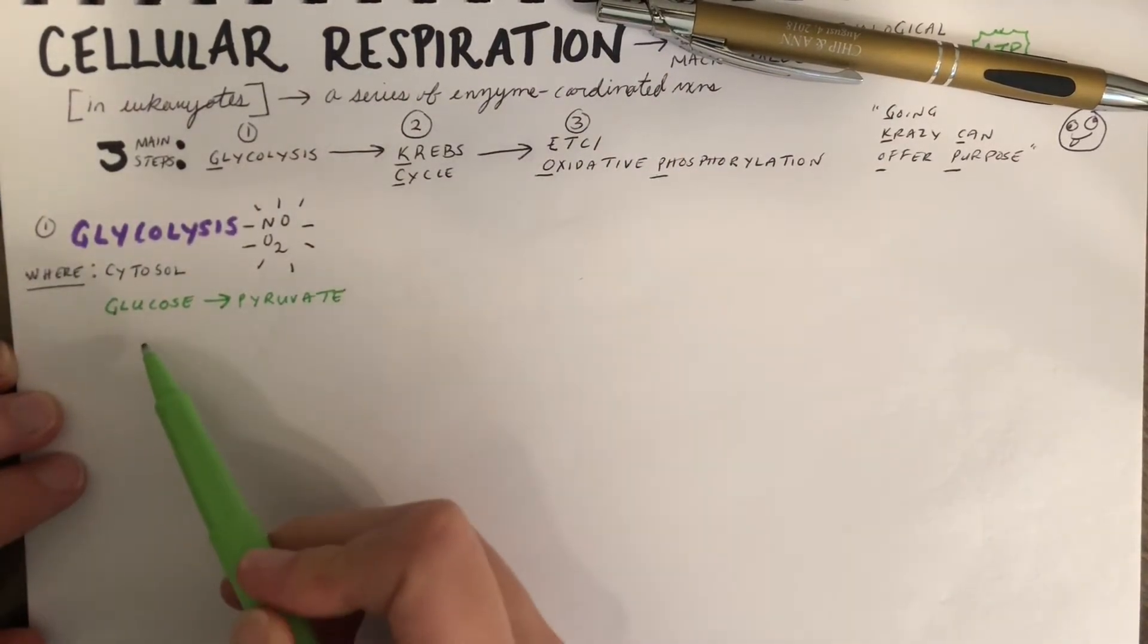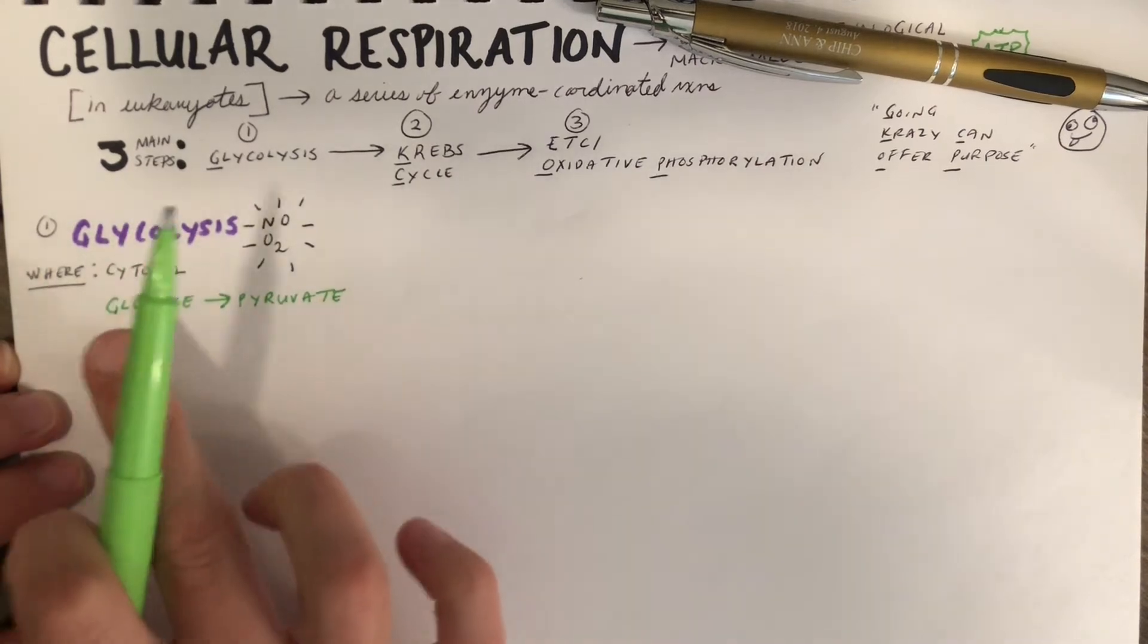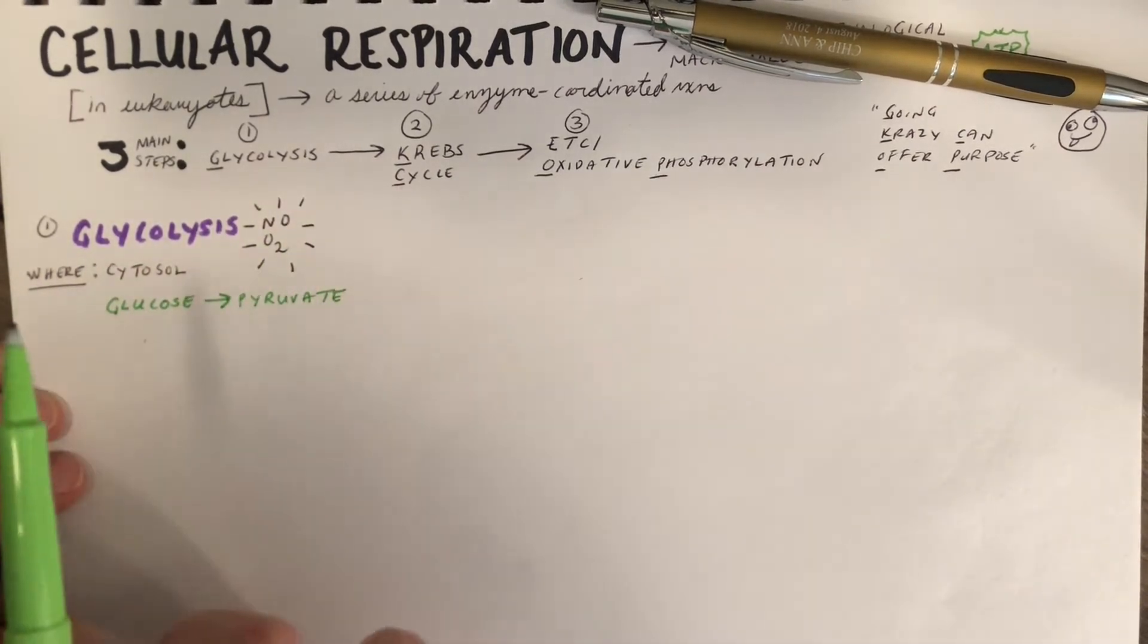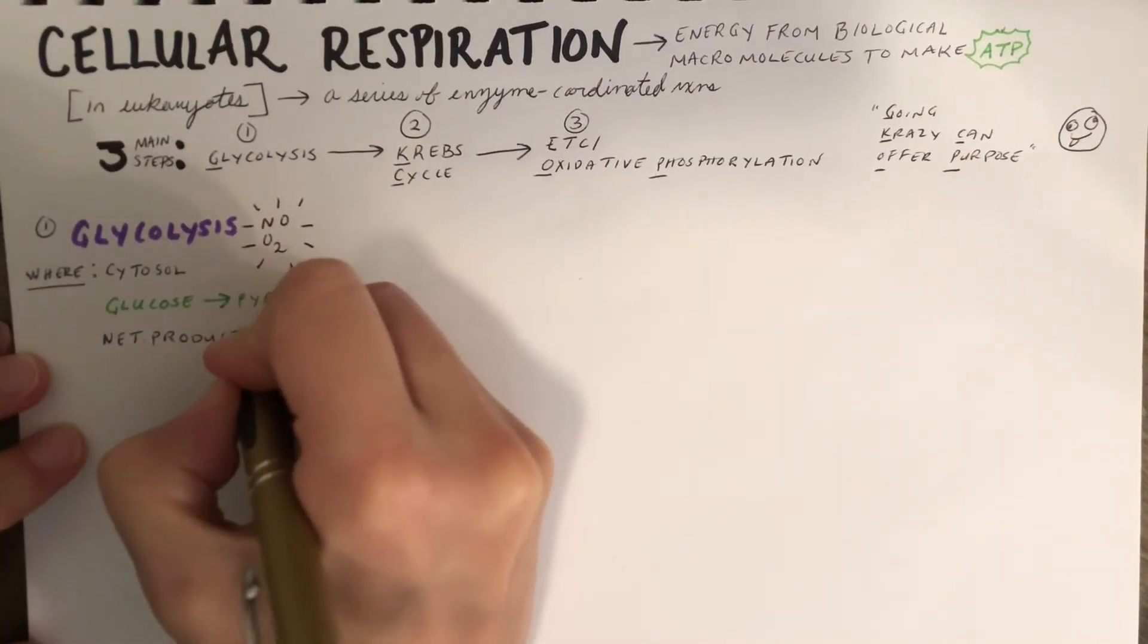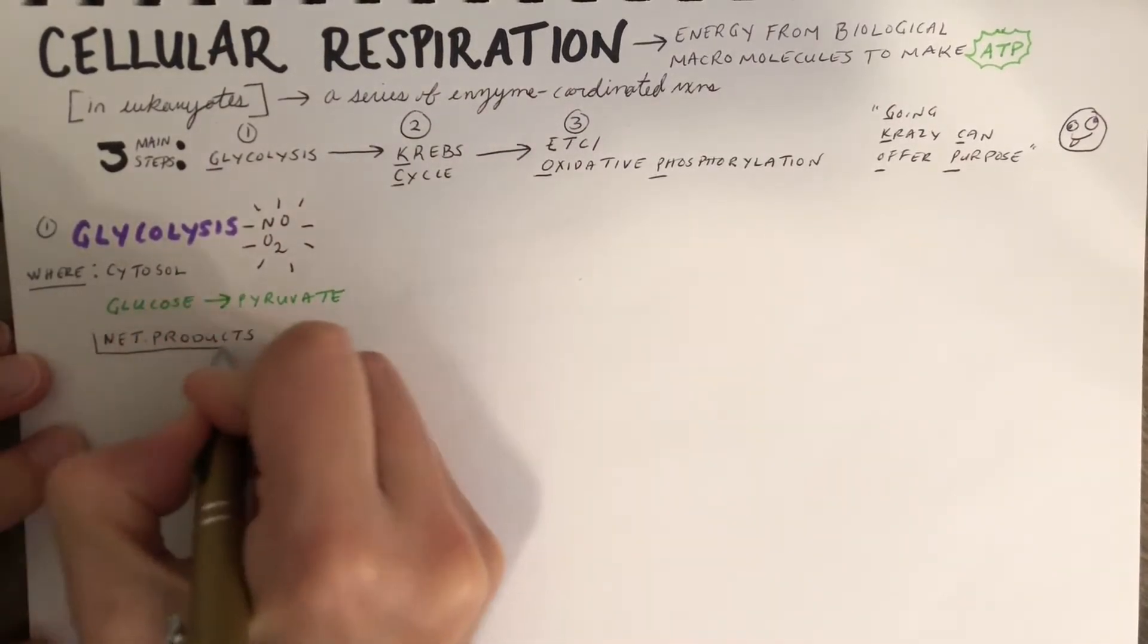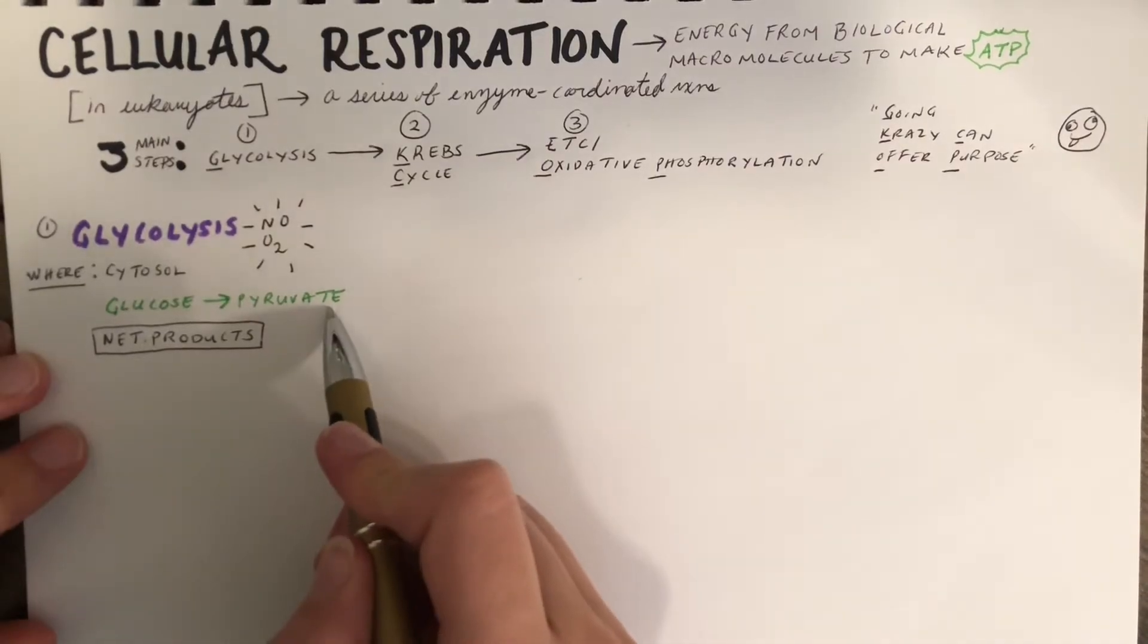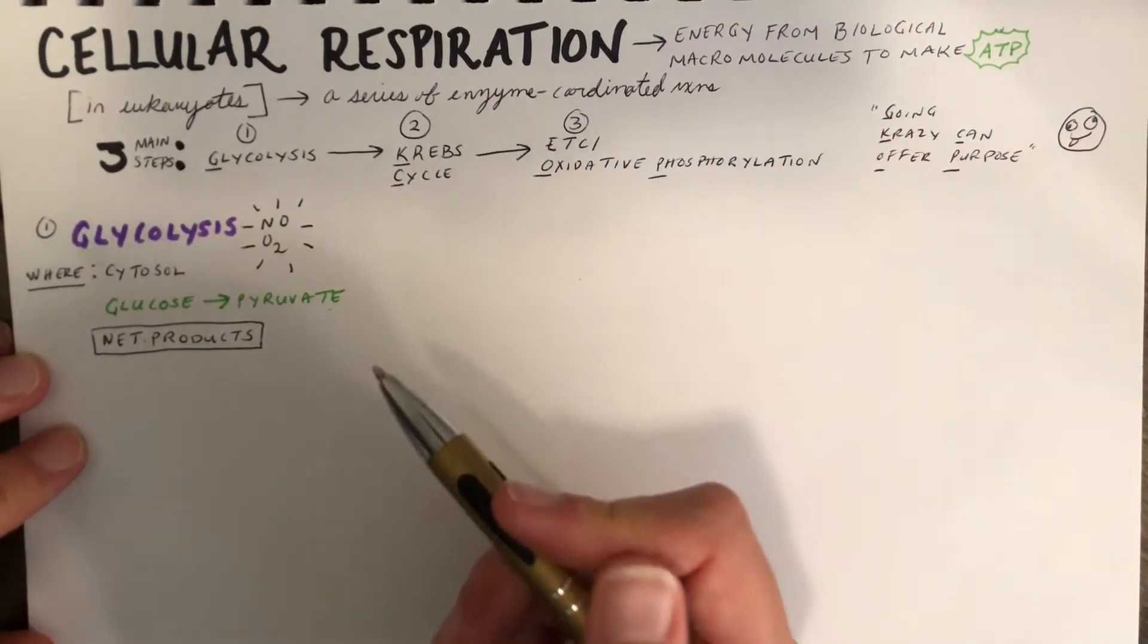Glycolysis is where the catabolism of glucose begins. Remember, catabolism is just the breakdown of a molecule for energy. The things we get out of glycolysis include pyruvate, which will then go through its own oxidation to produce acetyl coenzyme A.